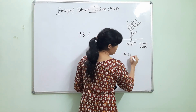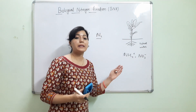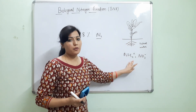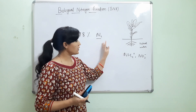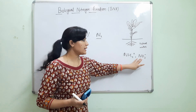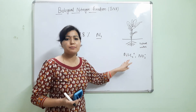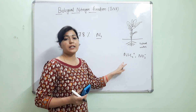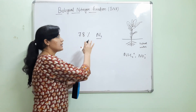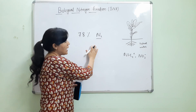Plants uptake only the inorganic form of nitrogen. These inorganic forms are ammonium and nitrate. Plants uptake nutrients and water from the roots, requiring inorganic forms of nutrients. Most plants uptake nitrogen in the nitrate form, and very few plants such as paddy and potato uptake nitrogen in the ammonium inorganic form.